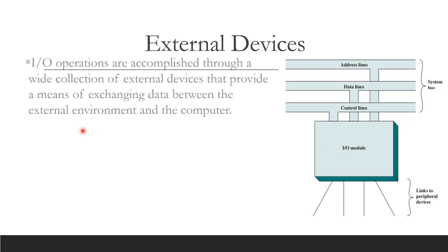What are external devices? IO operations — input/output operations — involve a wide collection of external devices. External devices provide the means of exchanging data between the external environment and the computer. There are many differences between the CPU and external devices. The computer is more than an electronic device, while the external device is more of an electromagnetic device.